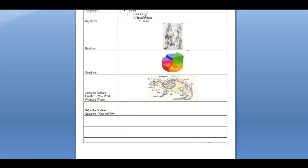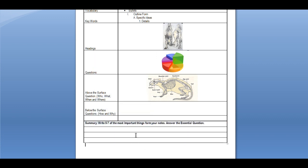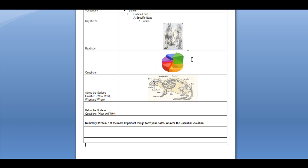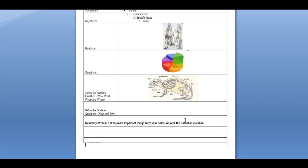Now that we know how to do the middle part of the Cornell notes, let's figure out what to do with the last part — the bottom section. This last part is also very important. You're going to write down a summary of what you just learned — five to seven of the most important things from your notes. You're also going to try to answer the essential question that was asked. By the end of the lesson, you should be able to answer: 'How is scientific knowledge generated and validated?'